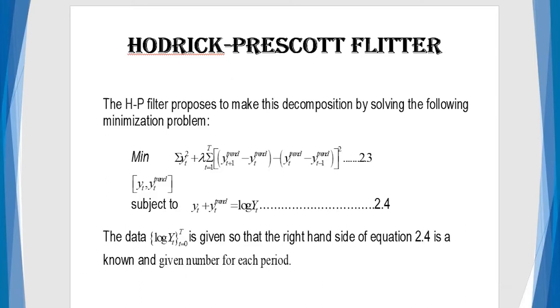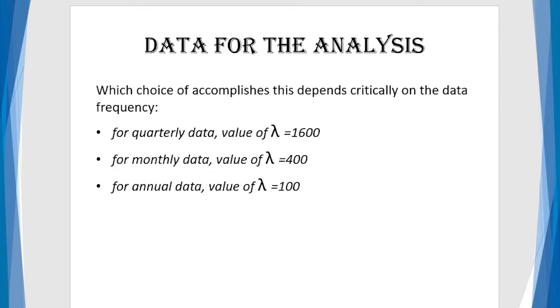It is known for a given period. And what do we mean? It means for any set of data you have, the choice of data depends on the frequency. And here, we have indicated that if we are dealing with quarterly data, lambda is always equal to 1,600. In the case of monthly data, the value of lambda is equal to 400. For annual data, value of lambda is equal to 100.